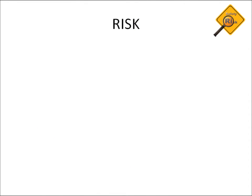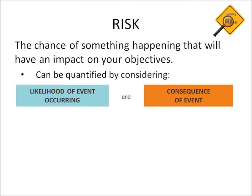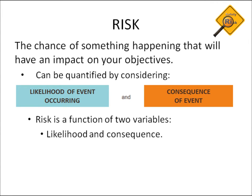We identify risk as the chance of something happening that will have an impact on our objectives. Risk can be quantified by considering the likelihood of an event occurring and the consequence of such an event. In other words, risk is a function of the two variables: likelihood and consequence.